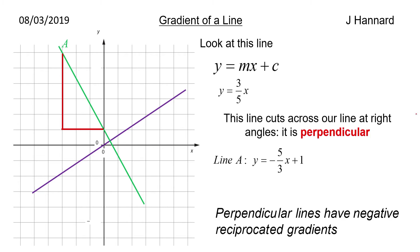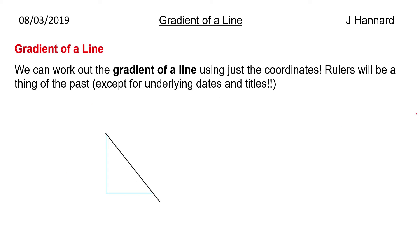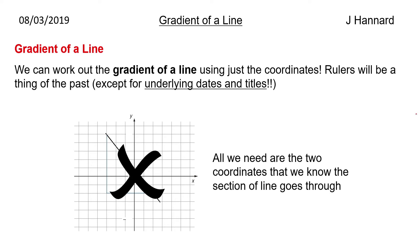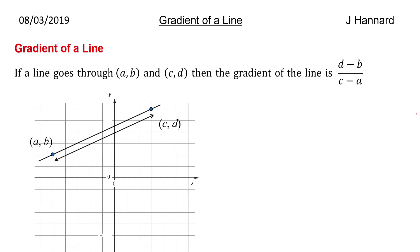That's just a little bit of background before we get into the main content. We can work out the gradient of a line using just the coordinates — rulers will be a thing of the past. All we need are the two coordinates that go through the line we want. If a line goes through (a, b) and (c, d), then the gradient of the line is d minus b over c minus a.